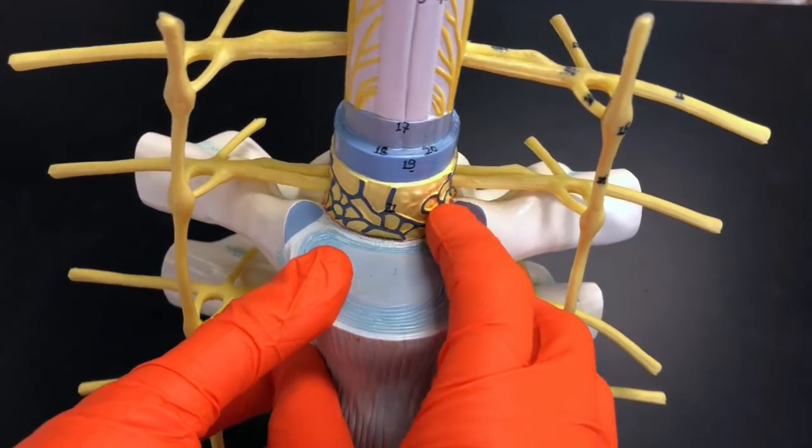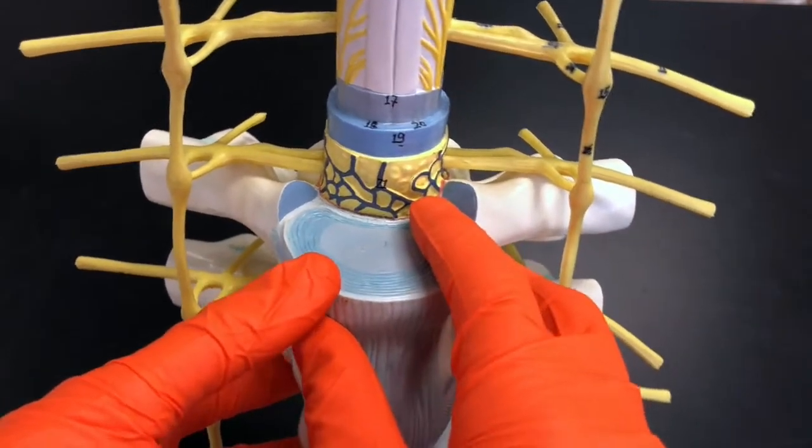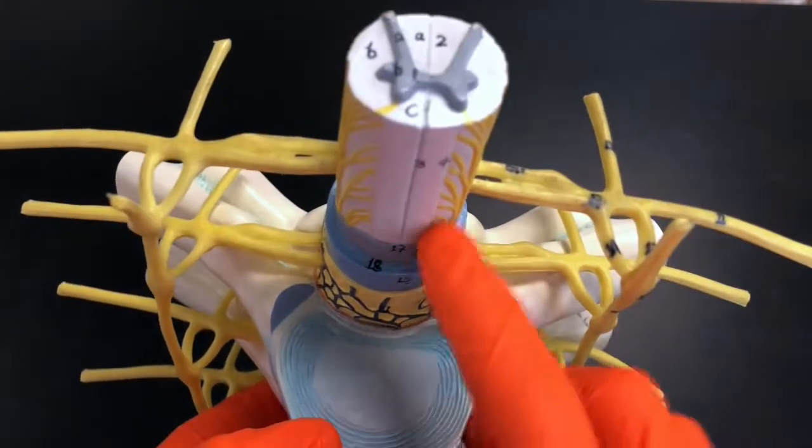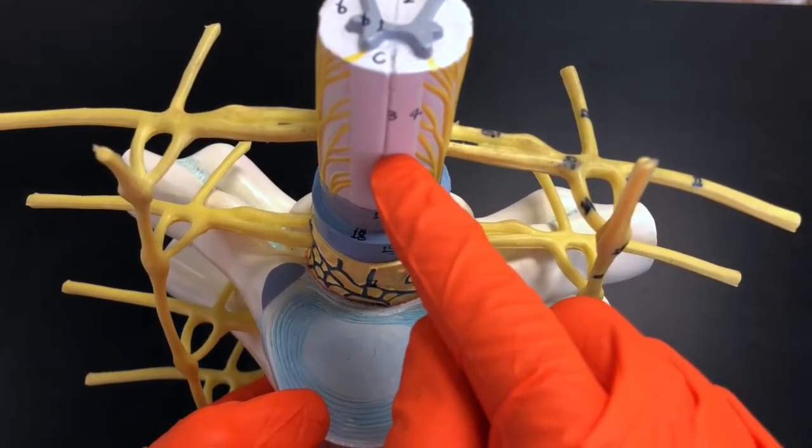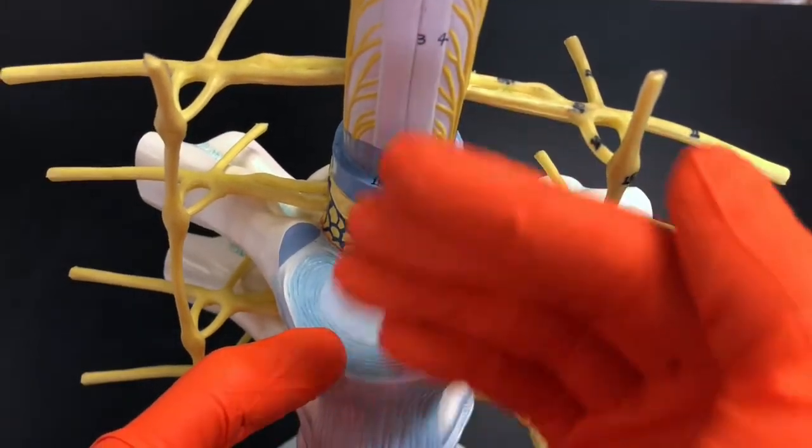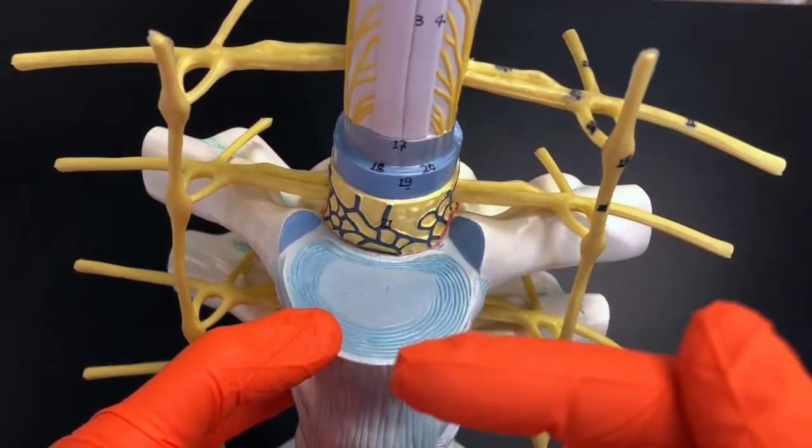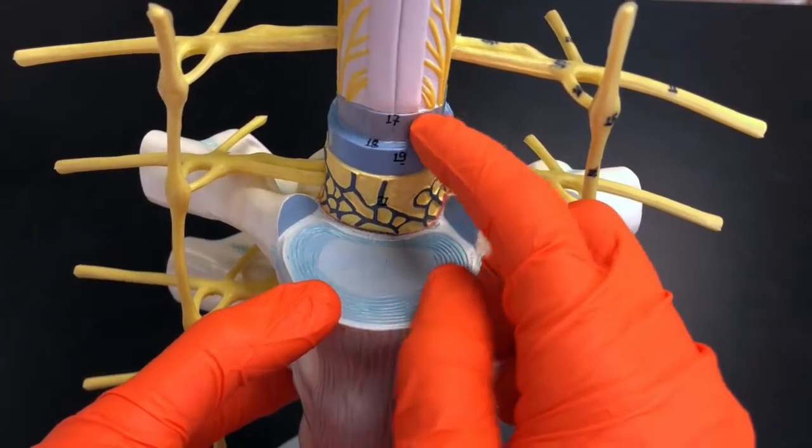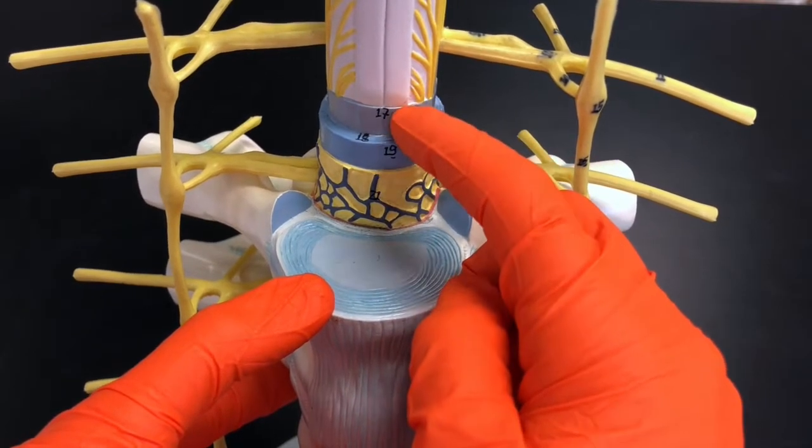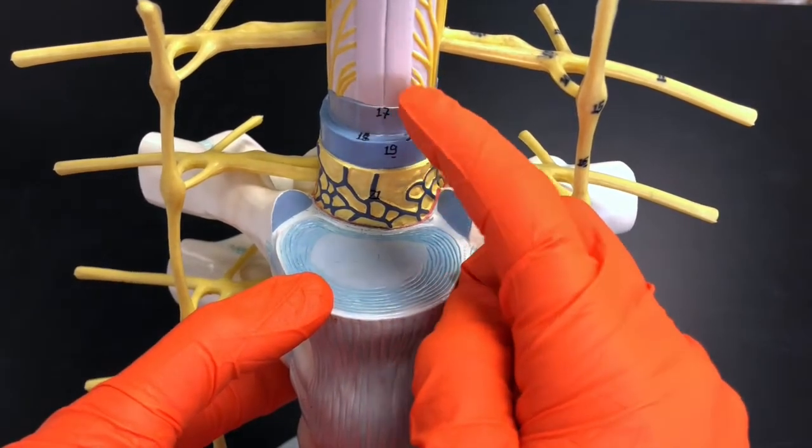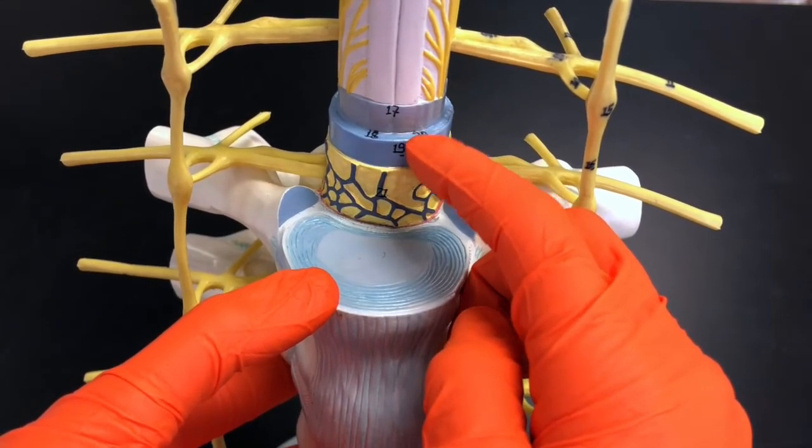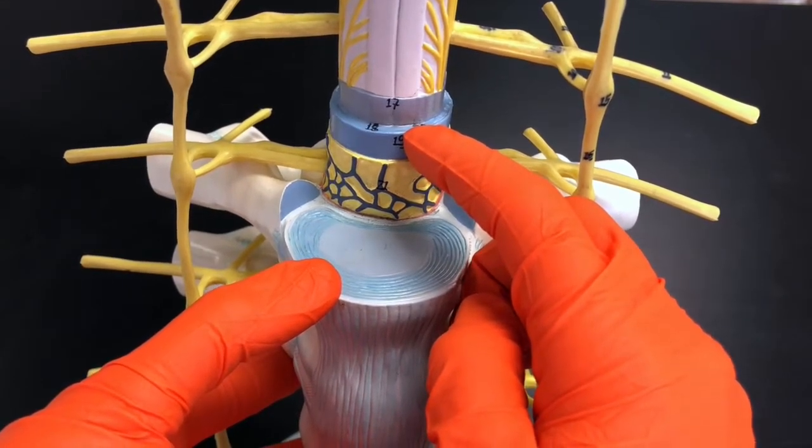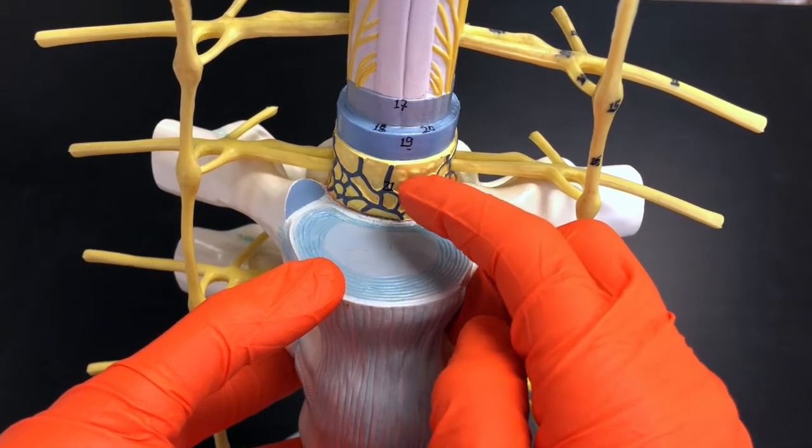If we were to go from innermost, meaning the part touching the spinal cord itself, to outermost, or deepest to most superficial, we would see the pia mater, which covers the spinal cord directly. Superficial to that, we have the arachnoid mater, and then superficial to that, we have the dura mater.